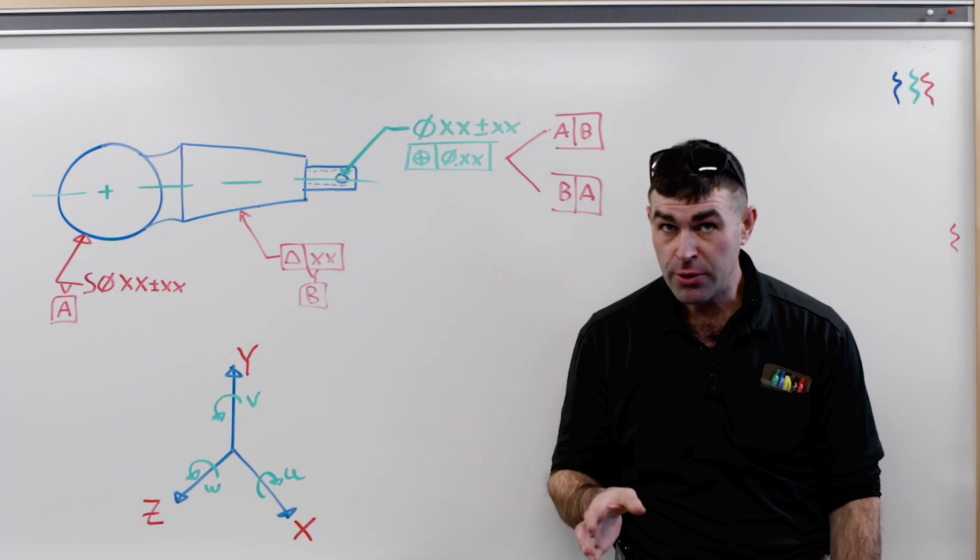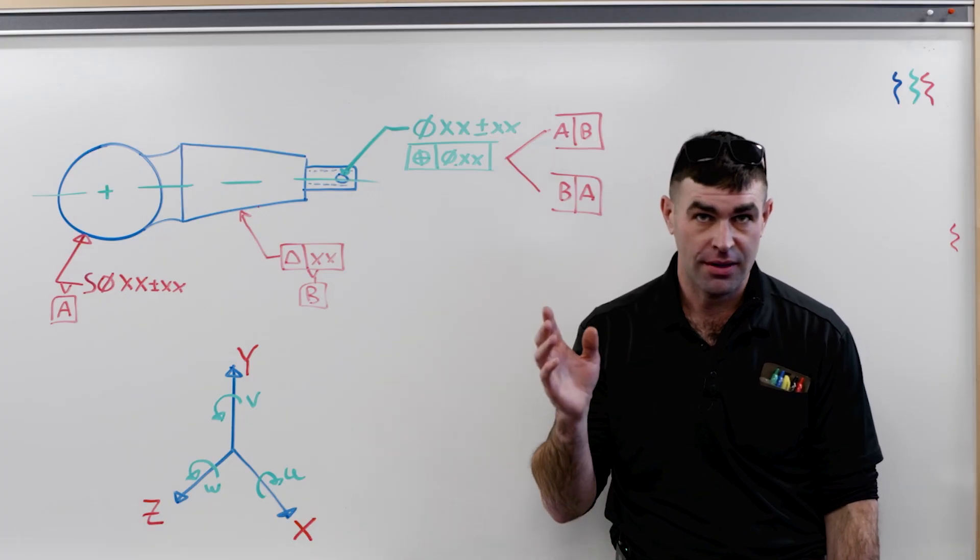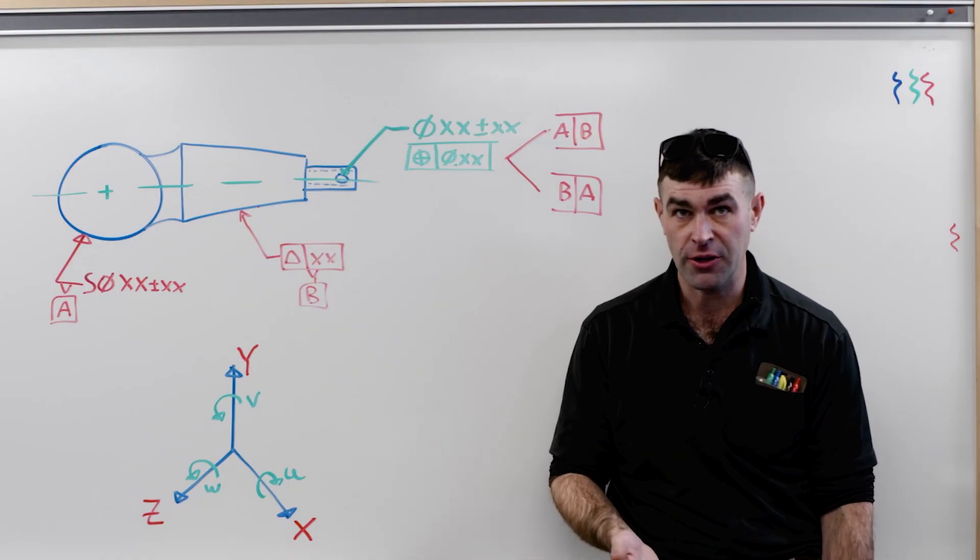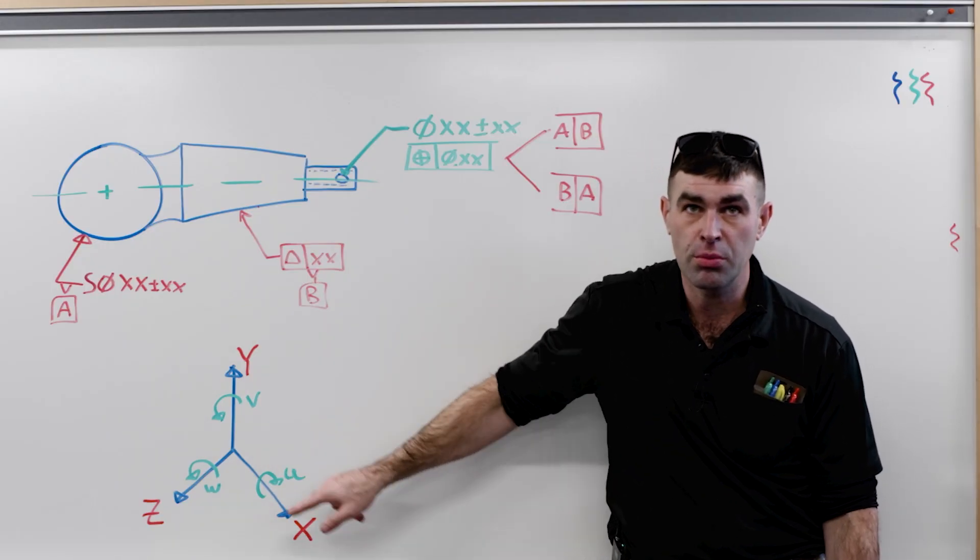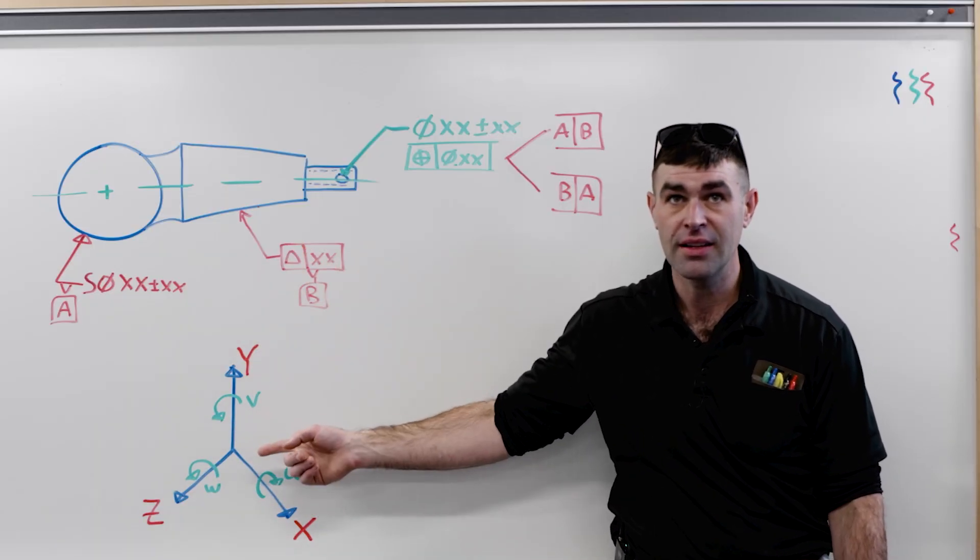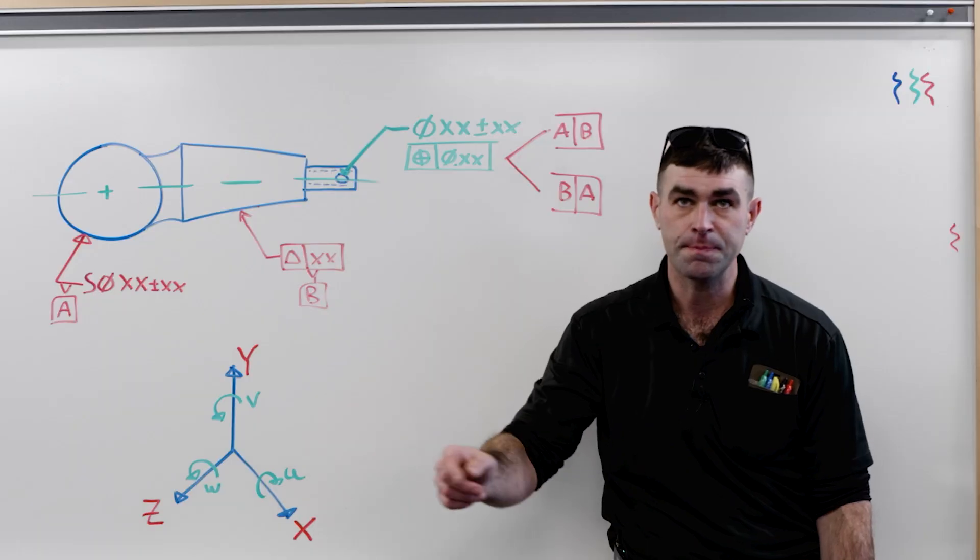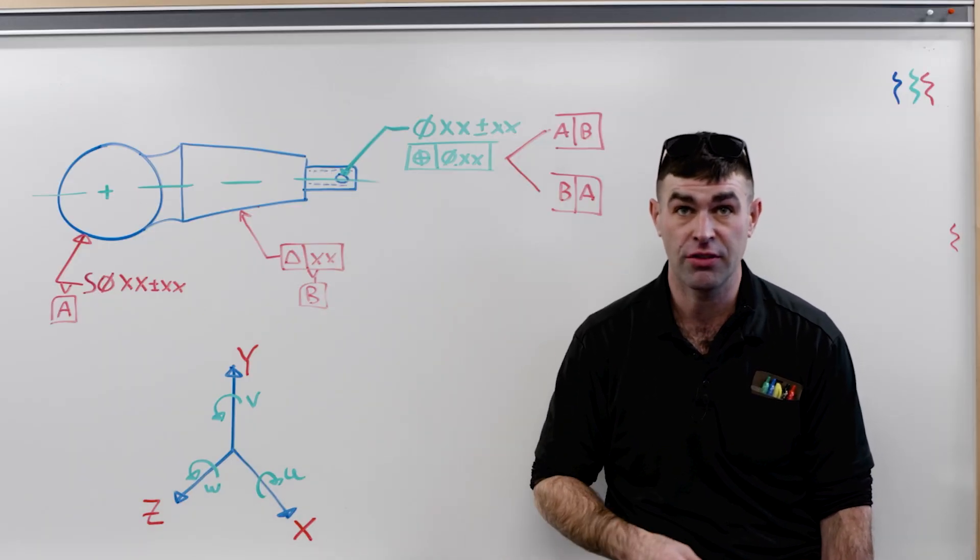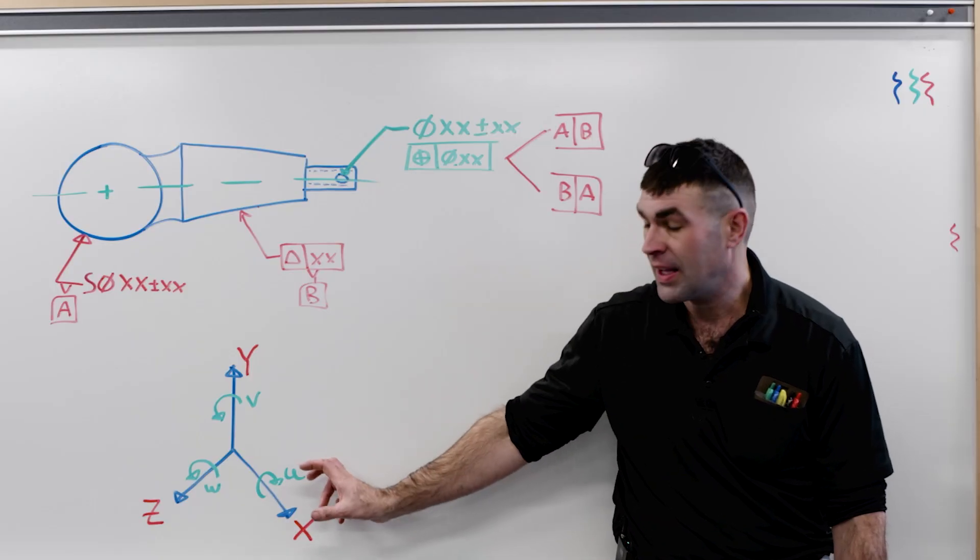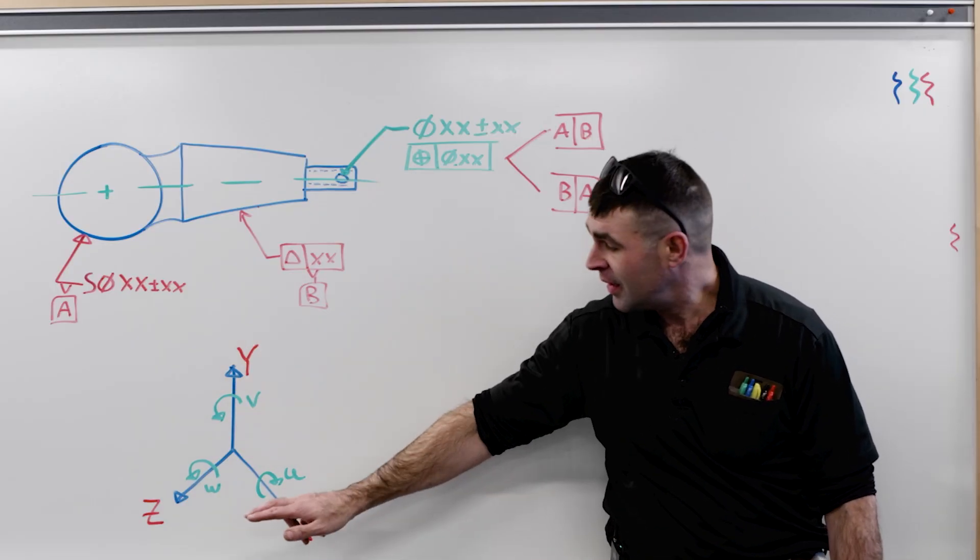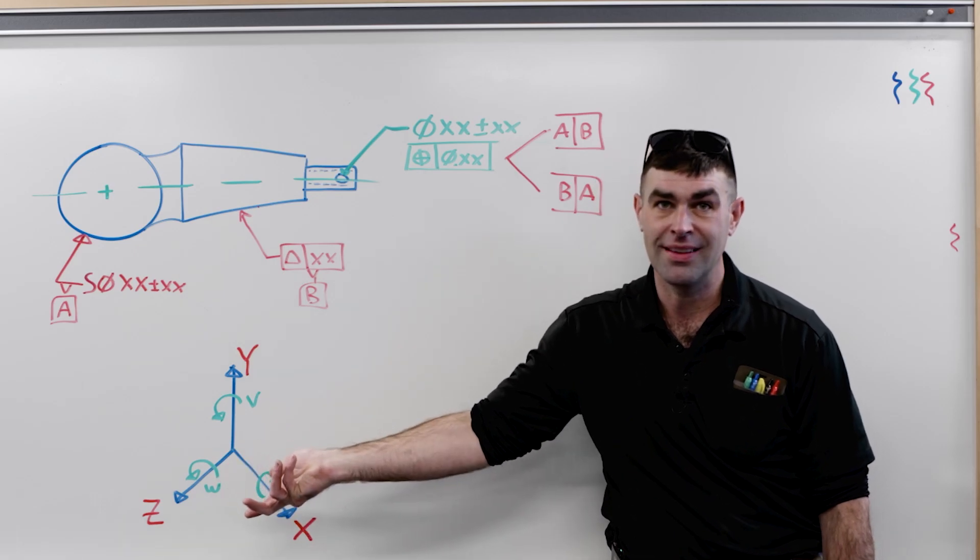So in the Y14.5 system, we've got X, Y, and Z, our translational degrees of freedom. If we think of a coordinate system, that's moving like this in X, moving like this in Y, and Z coming in and out of the board. We've also got rotational degrees of freedom about each of those axes. So that's little u with X, little v with Y, and little w with Z.